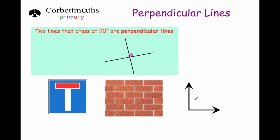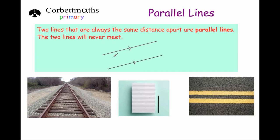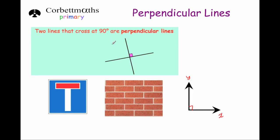Even a set of axes — the x-axis and the y-axis, if you've learned or studied coordinates — they meet at 90 degrees, so they're perpendicular to each other. So, parallel lines are two lines which stay the same distance apart and they never meet, and perpendicular lines are lines that cross each other at 90 degrees.